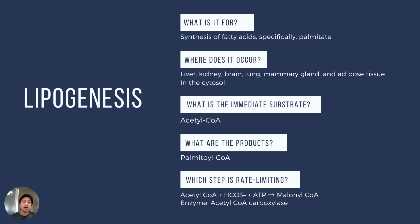We use acetyl-coenzyme A and combine it with other molecules of acetyl-coenzyme A to form palmitic acid, a 16-carbon long fatty acid. The slowest step is the carboxylation of acetyl-coenzyme A, where we attach a molecule of carbon dioxide to acetyl-coenzyme A — a 2-carbon fatty acid — to form the intermediate malonyl-coenzyme A, a 3-carbon fatty acid. Since this is the slowest step, acetyl-coenzyme A carboxylation is the rate-limiting step and an important point for regulation. The speed of lipogenesis depends on the activity of acetyl-coenzyme A carboxylase.